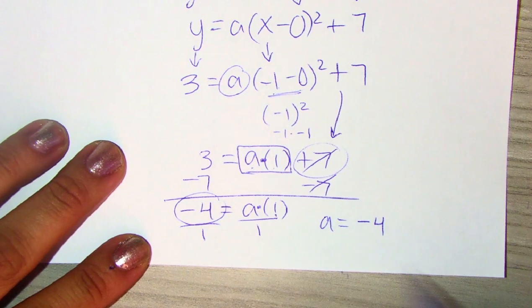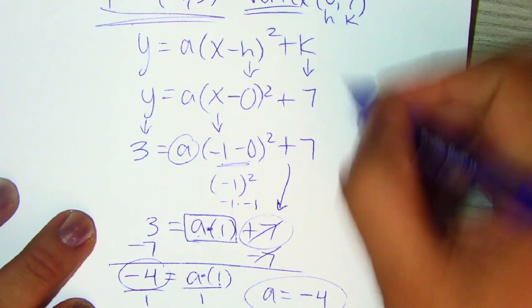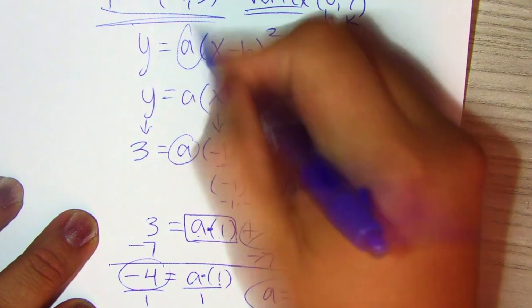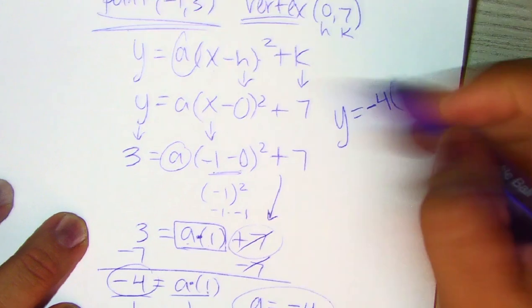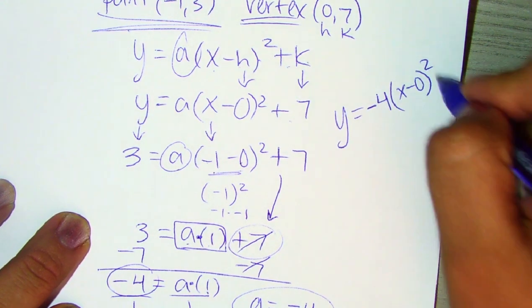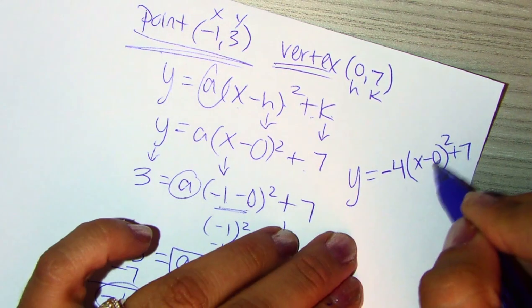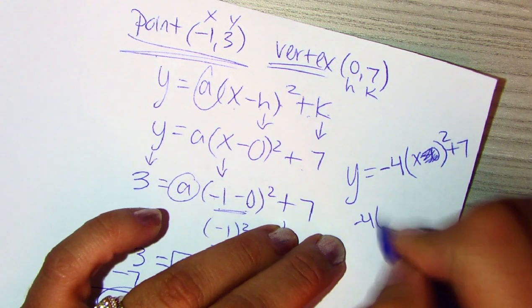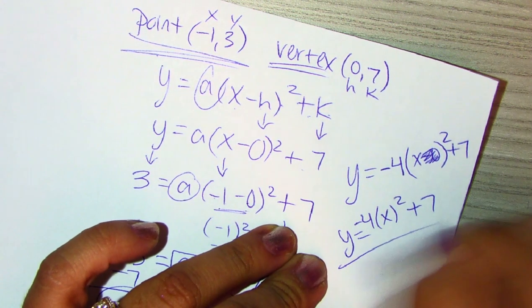So, next, we're going to just finalize this A value with what we have up here. So, we're going to have Y equals the A value of negative 4, X minus H. So, X minus 0 squared plus K, so plus 7. And if we simplify this part right here of minus 0, that's nothing. So, just negative 4X squared plus 7 is your answer.